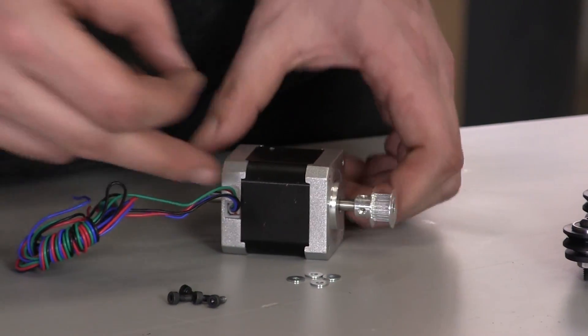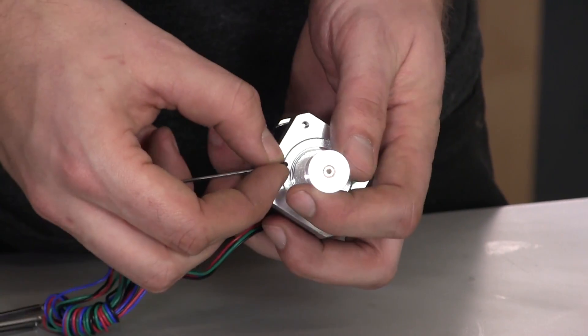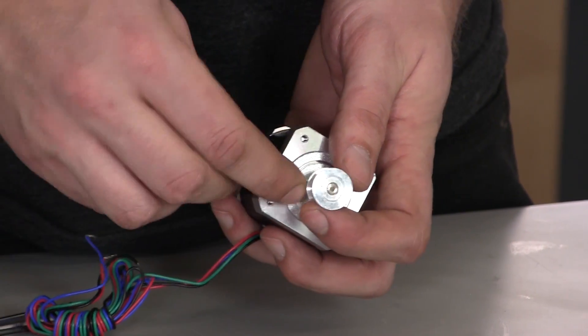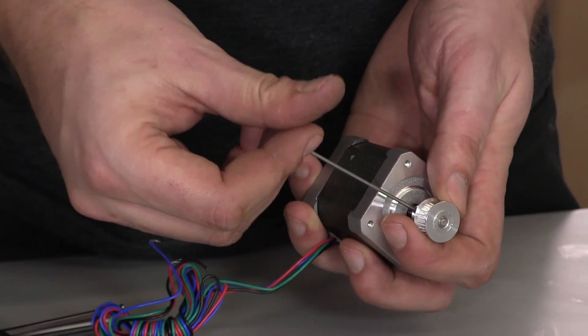Again, these are tiny, frail screws, and so is the threading on the pulley. So go in slowly and try not to cross-thread these.